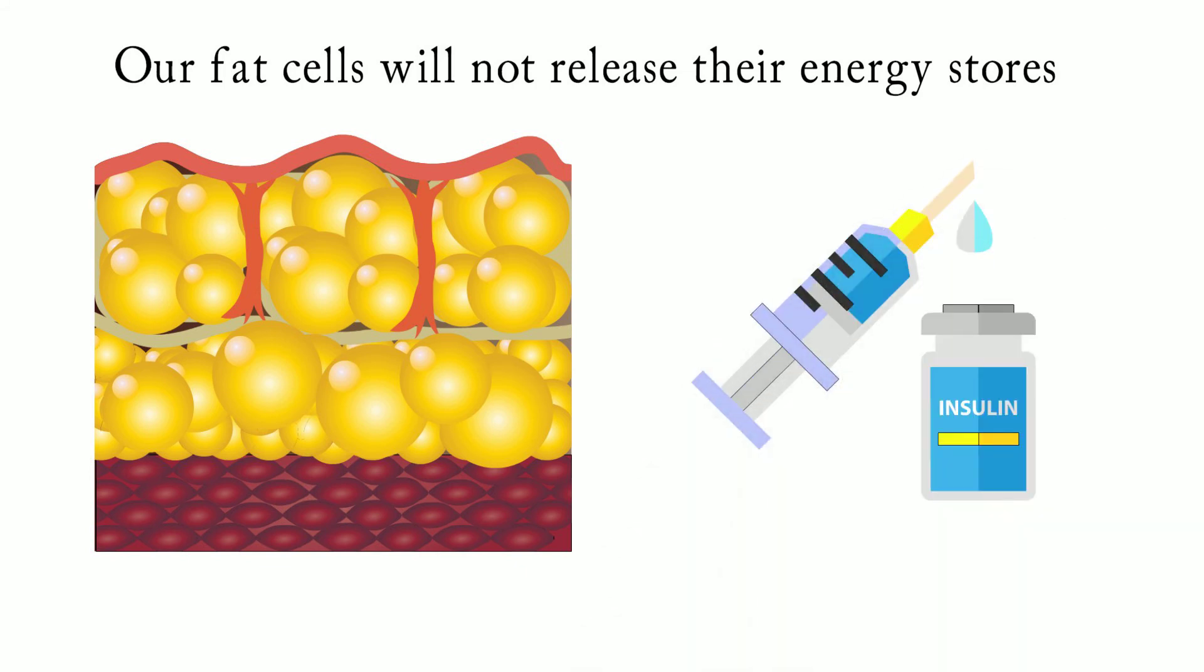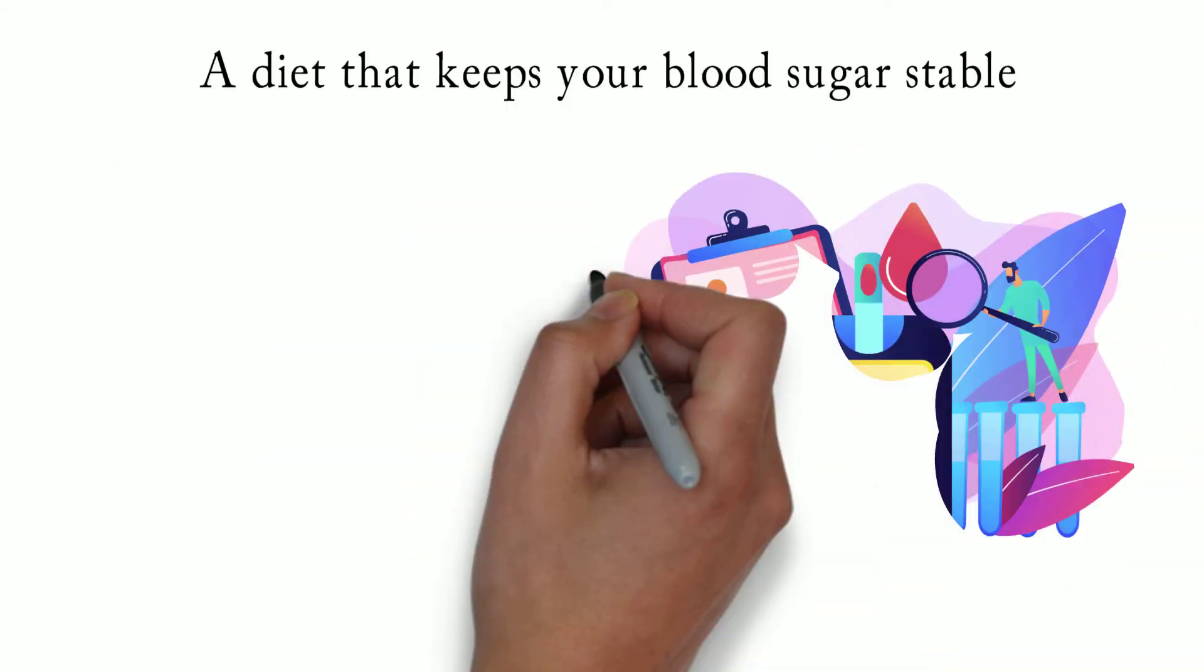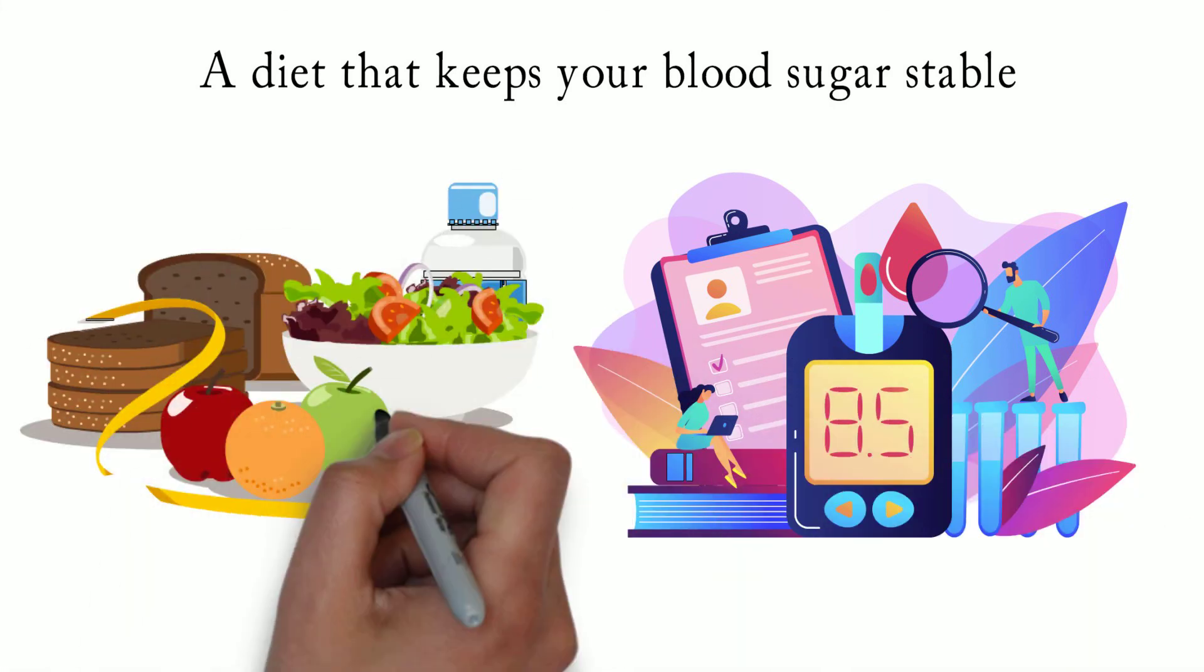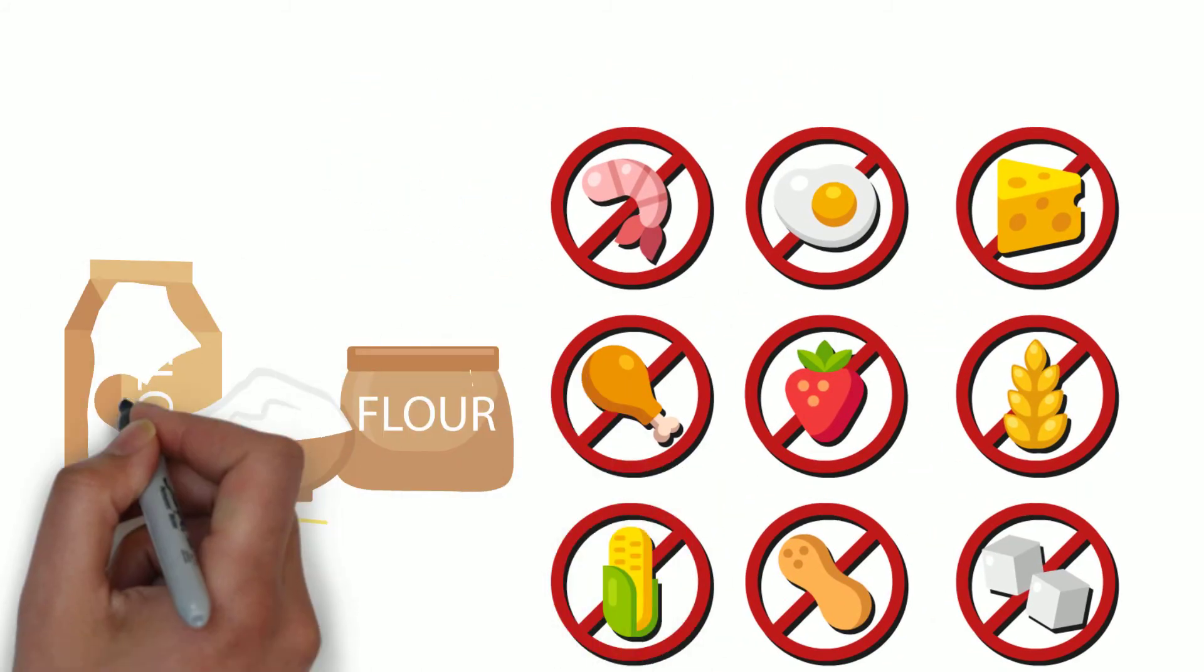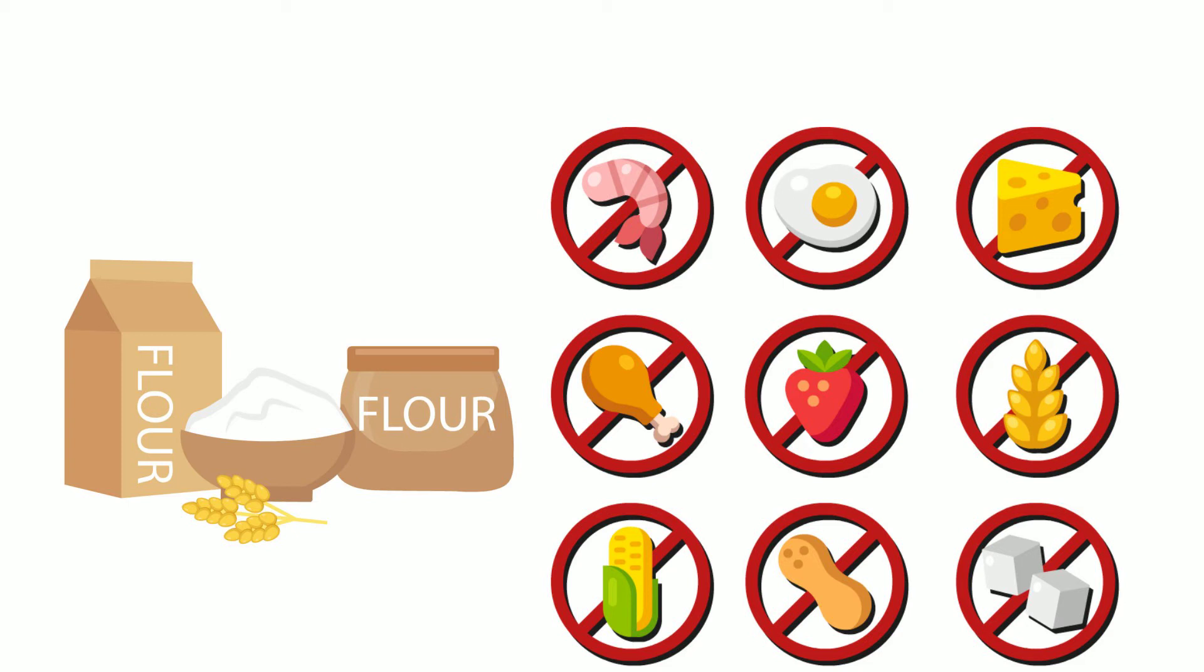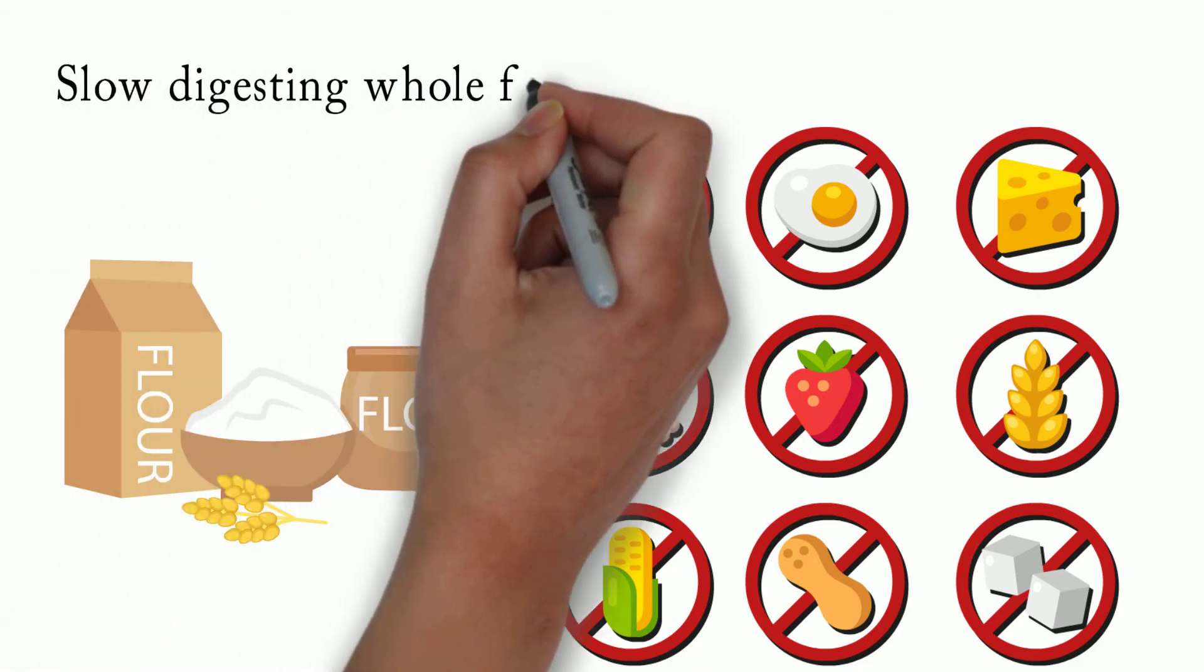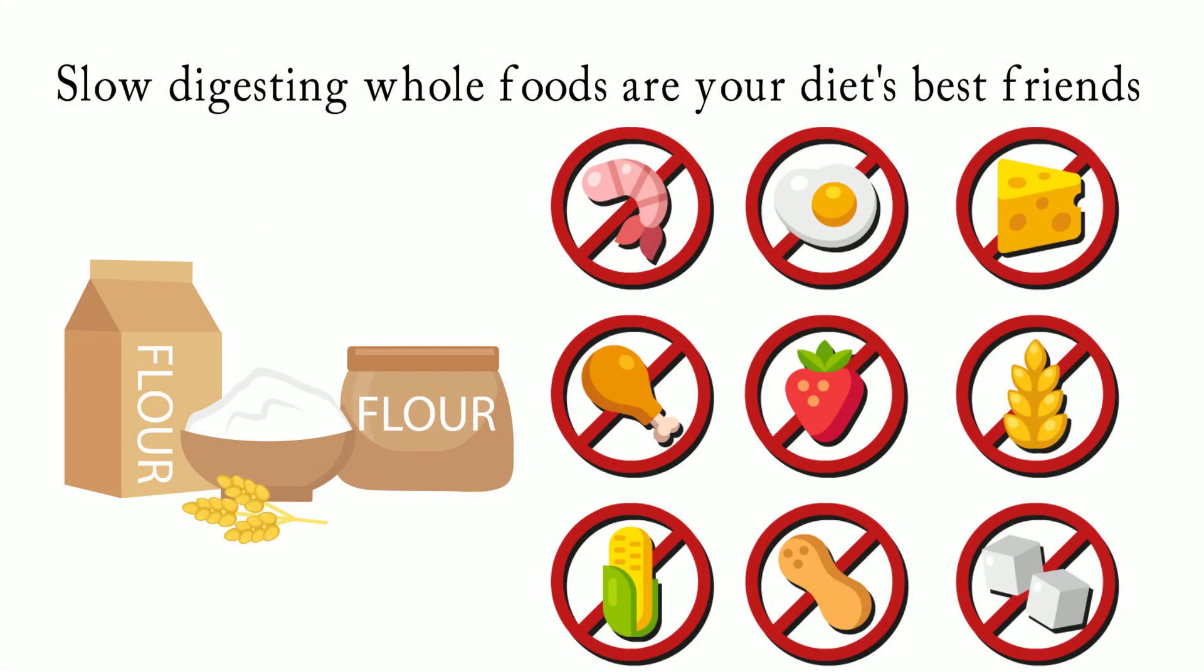It's important to note that our fat cells will not release the energy stores if insulin is present. So, a diet that keeps your blood sugar stable and in a healthy zone is the way to fat loss. This means avoiding sugar, refined carbohydrates, white flour, and many fast-digesting packaged foods. Slow-digesting whole foods are your diet's best friend.